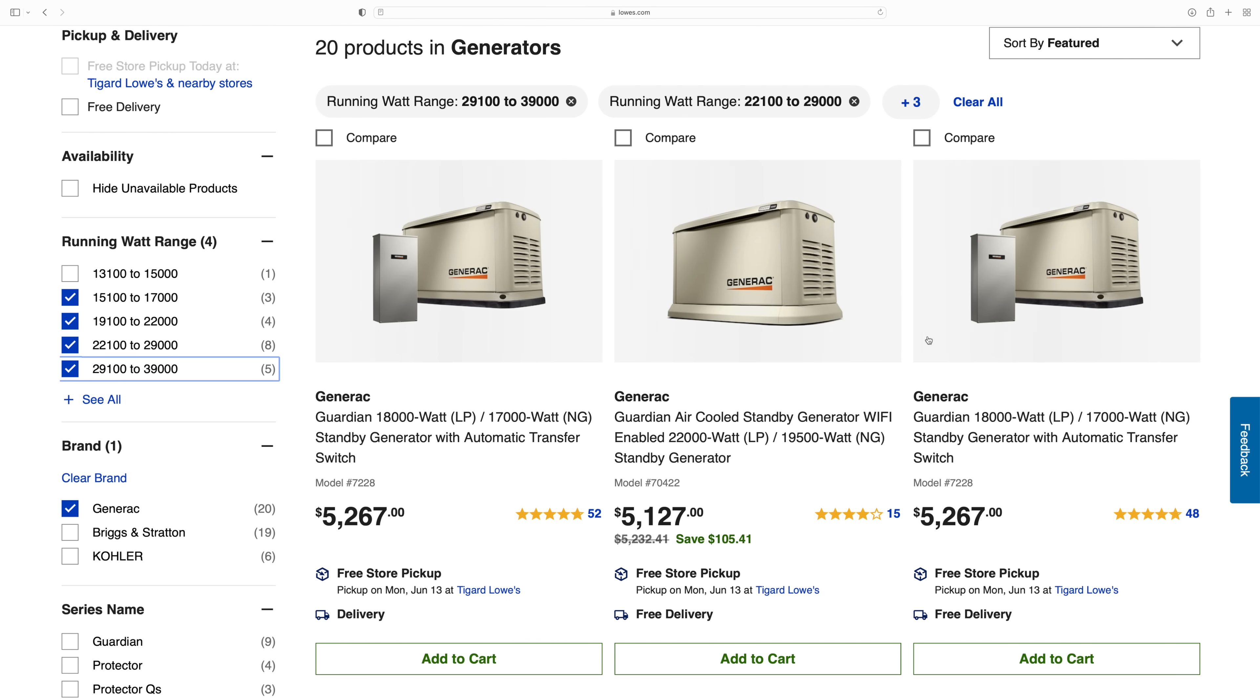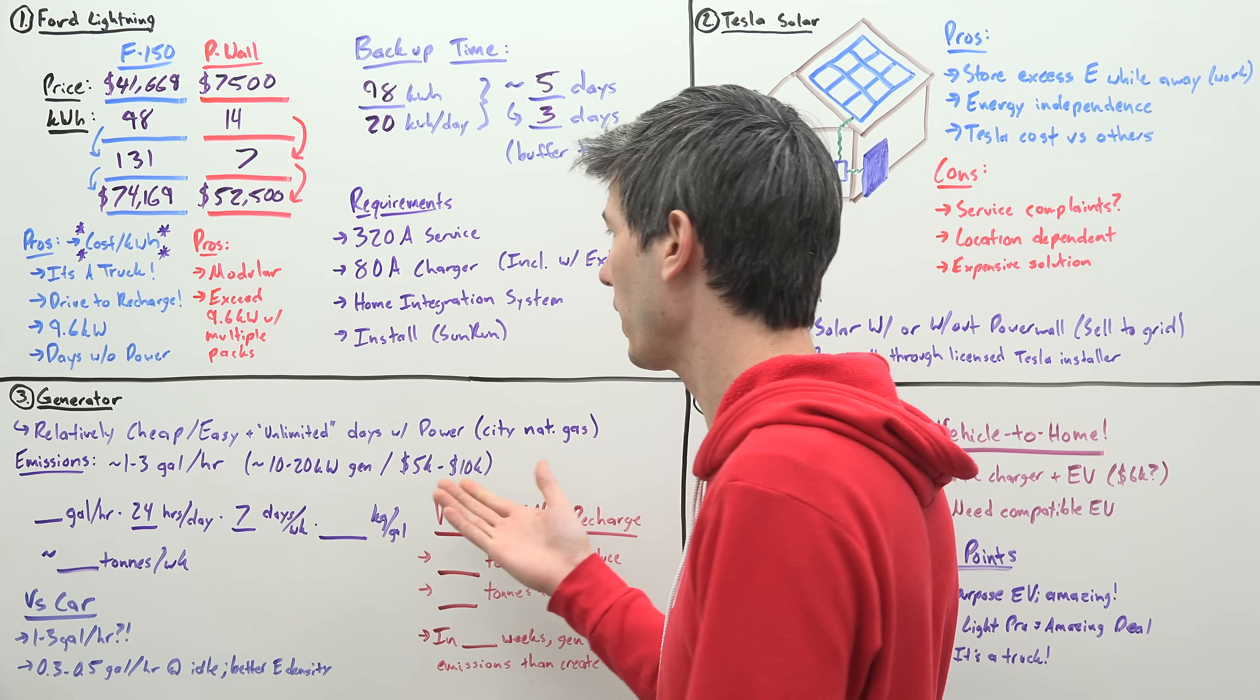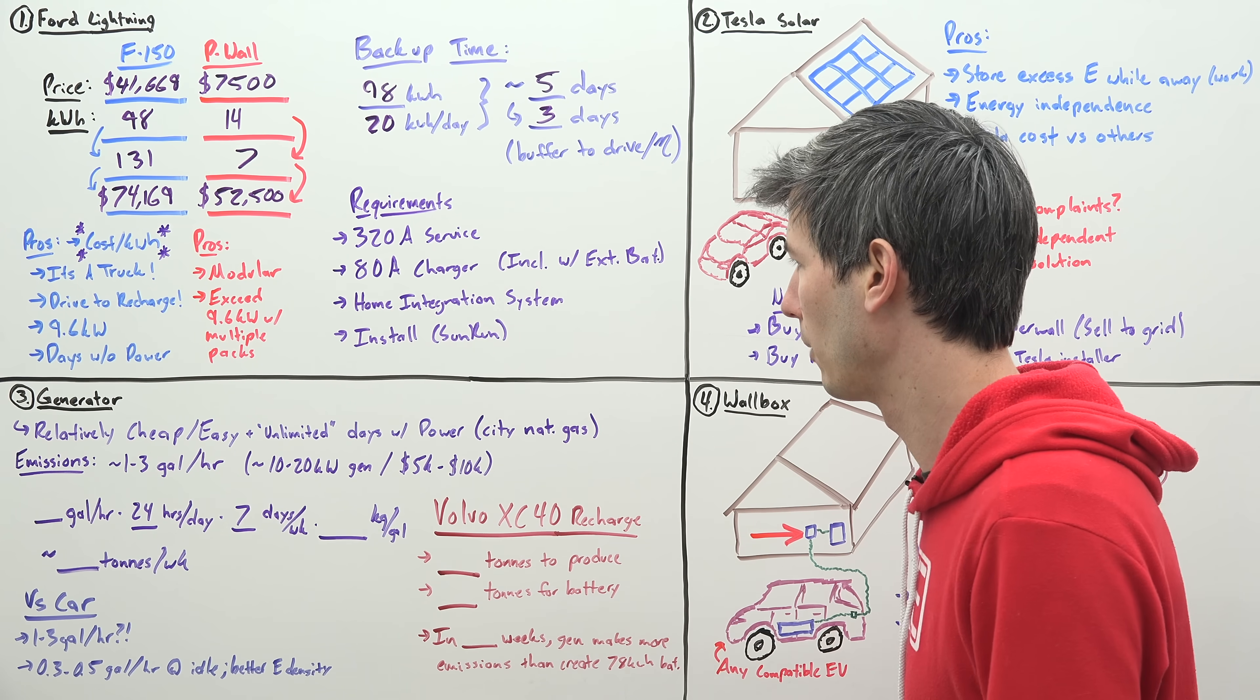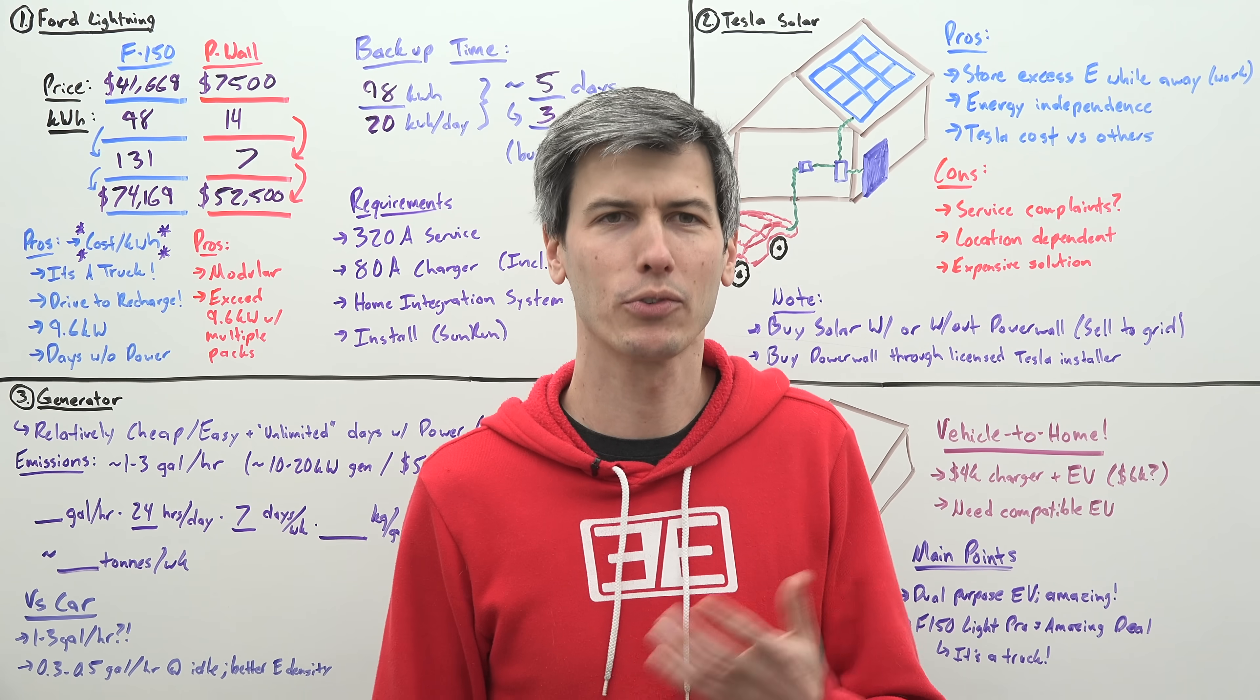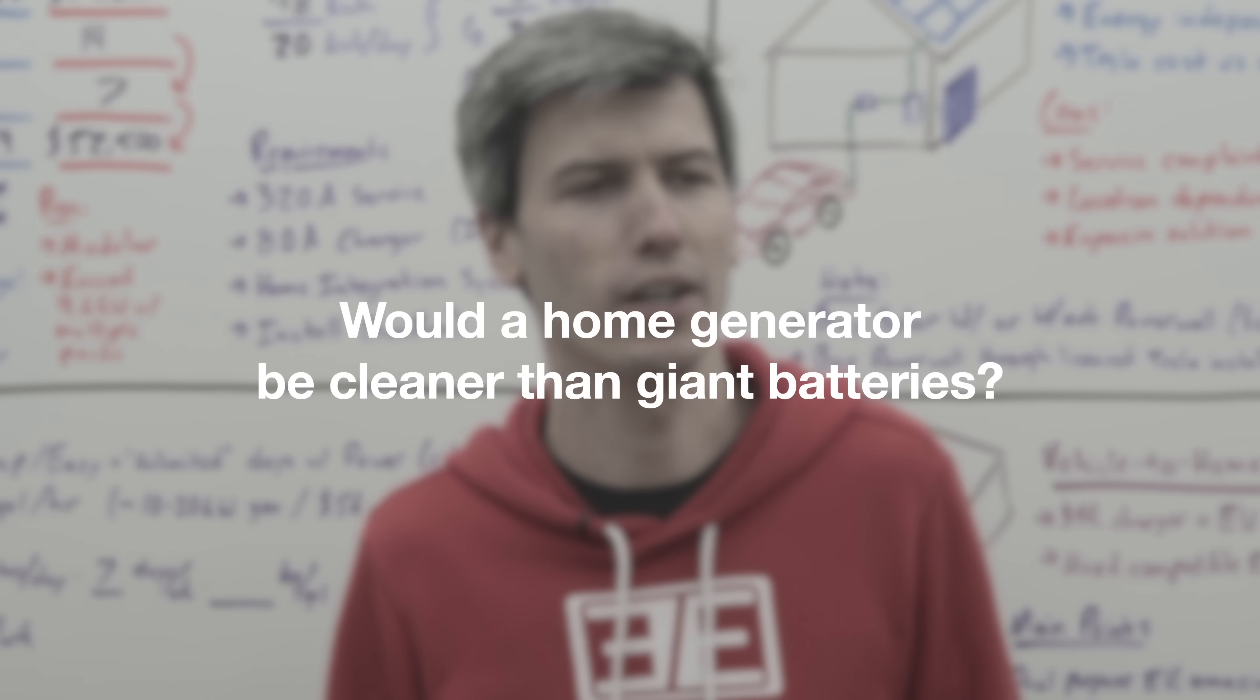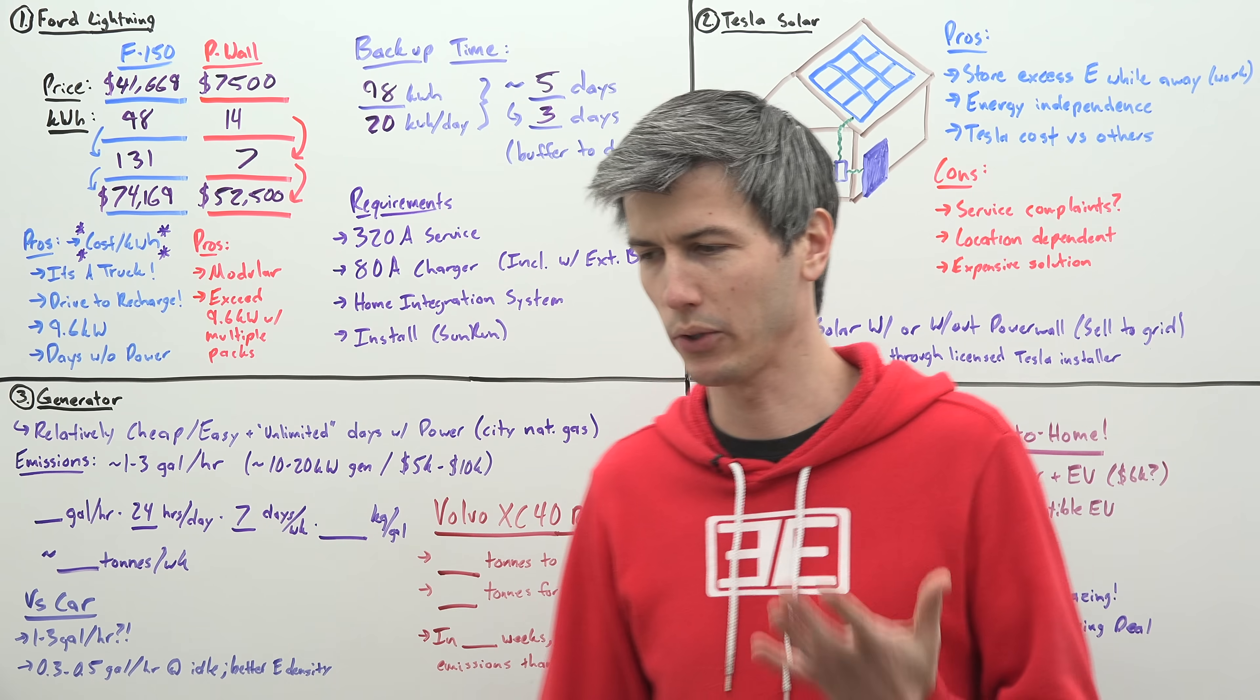You can get a whole home generator installed that's making 10 to 20 kilowatts power for your home in the $5,000 to $10,000 range. And if you're running off the city-supplied natural gas, that thing just runs as long as you need it. Or you can do propane if you want to be self-sufficient. So the question I had, and I'm sure it's not a question that many people had, but I was curious, what are the actual emissions from a home generator? And I thought if this is just something that turns on once every year for a few days, how much emissions could it possibly produce?